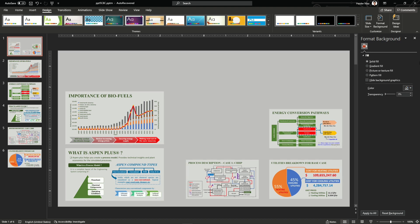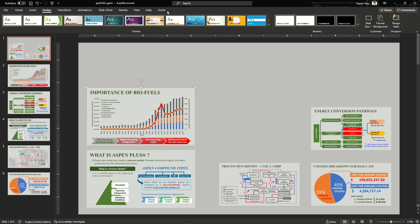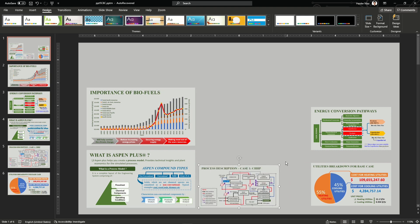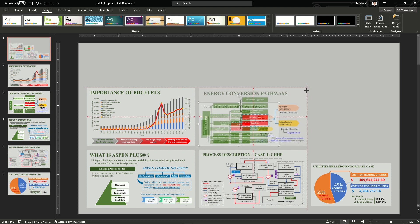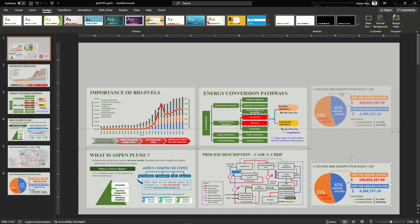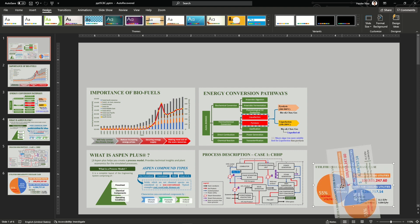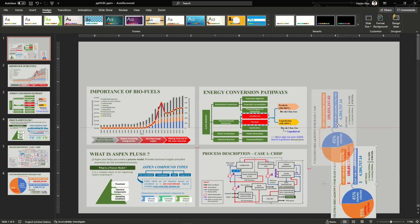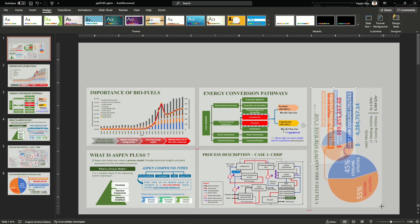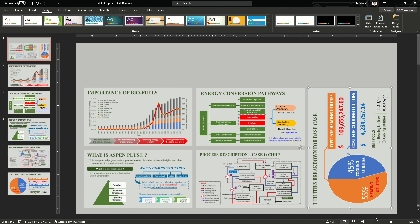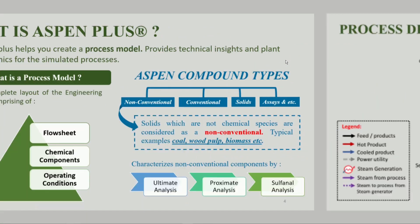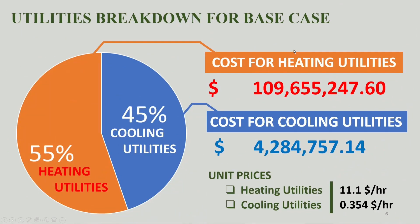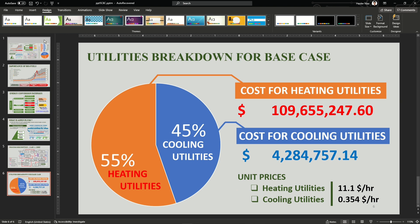Now let's work back on the zoom slides to reduce empty spaces. I'm increasing the size of the images to cover the space. For the last image, I'm going to rotate it anti-clockwise, increase its size, and extend it from the border to fill the space. Note that distorting the thumbnail here doesn't affect the original slide content.